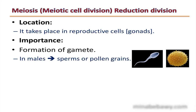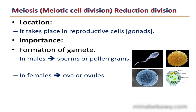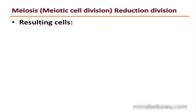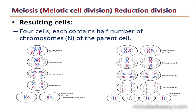In males, gametes are sperms in animals and humans, and pollen grains in flowering plants. In females, gametes are ova in animals and humans, and ovules in flowering plants. Meiosis produces four cells, each containing only half the number of chromosomes — haploid (N) — of the parent cell.